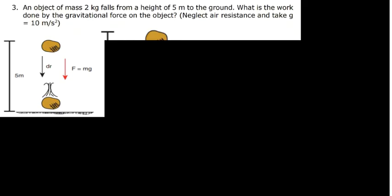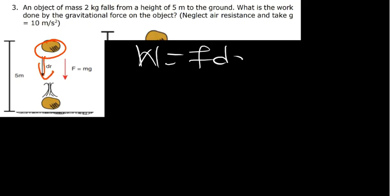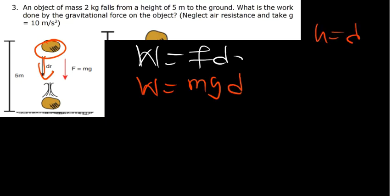Question 3 is saying: an object of mass 2 kg falls from a height of 5 meters to the ground. What is the work done by the gravitational force on the object? Neglect air resistance and take g to be 10 m/s². They want us to find the work done by the gravitational force. Since the object is falling, the force is the weight, so work equals mg times d — and in this case, d is the height, so work equals mgh.